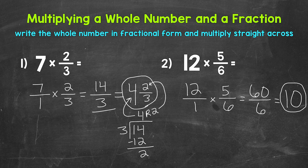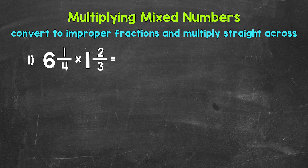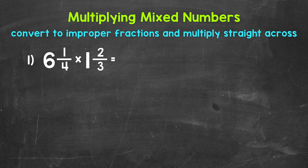There's how to multiply a whole number by a fraction. Let's move on to multiplying mixed numbers. We will go through two examples. Let's jump into number 1, where we have 6 and 1 fourth times 1 and 2 thirds. When we have a multiplication problem involving fractions, we multiply straight across — numerators times numerators and denominators times denominators. Our first step is to convert the mixed numbers to improper fractions.